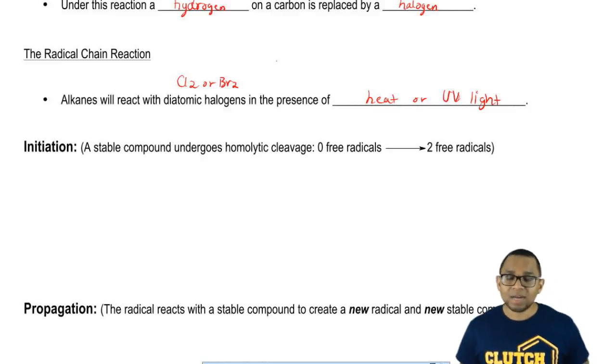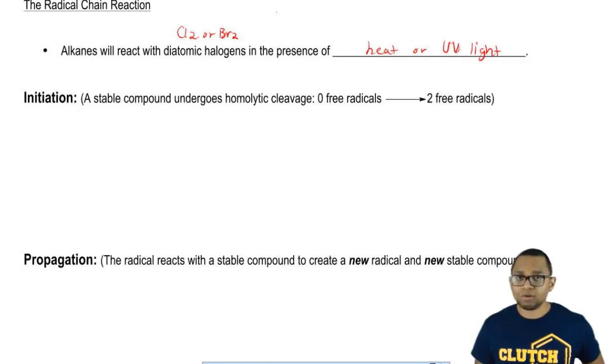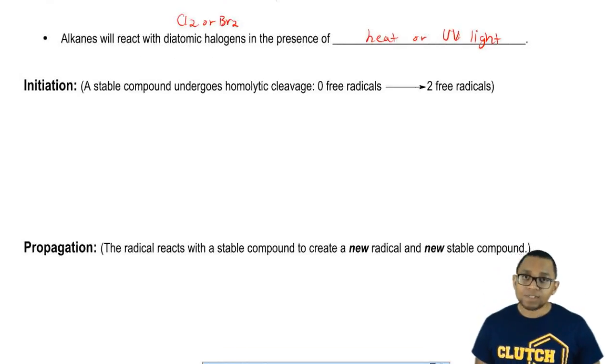We're going to say here that when it comes to this process, there are three basic steps to a radical chain reaction. The first step is initiation. Here a stable compound undergoes homolytic cleavage.